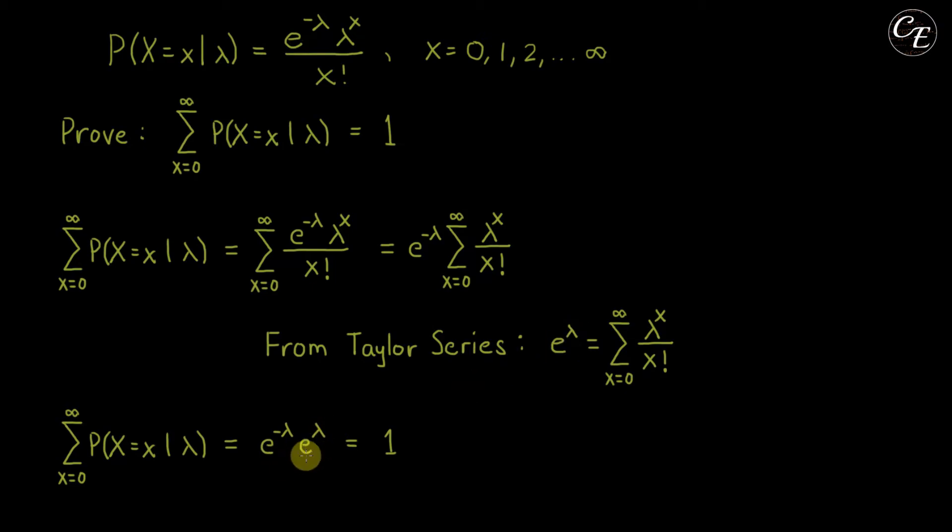Then combining exponentials we have e raised to negative λ plus λ which is 0. So we have here e raised to 0. And e raised to 0 is 1, so we have here just 1. So now we have the constant 1 which we need for our proof.